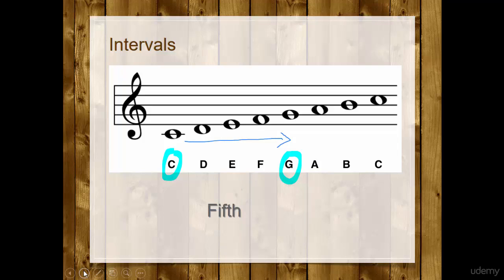Now another example. If I go from D to B, I'm going to have six notes, so this interval is a sixth.